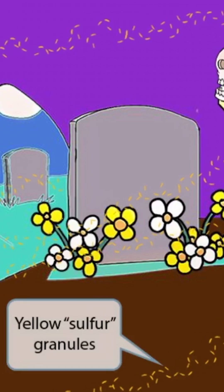It's important to know that sulfur granules appear yellow when examined grossly, especially in the pus from an Actinomyces abscess. However, when examined under the microscope with a gram stain, they appear blue or purple. So don't get hung up on this yellow color idea when you're looking at one under a microscope.